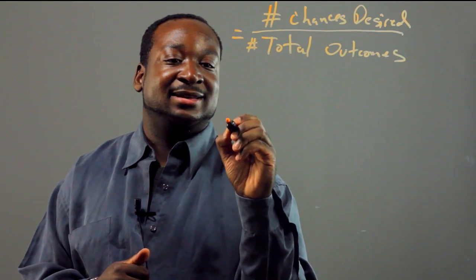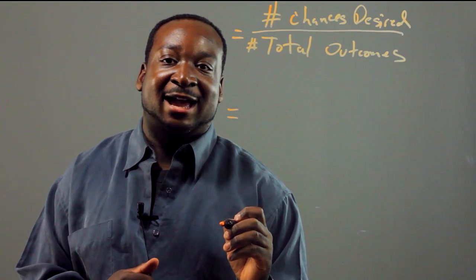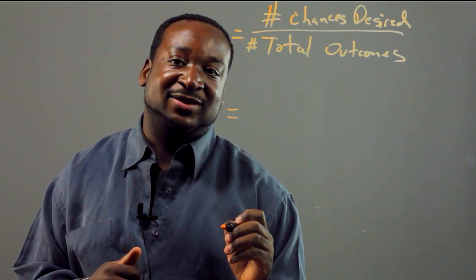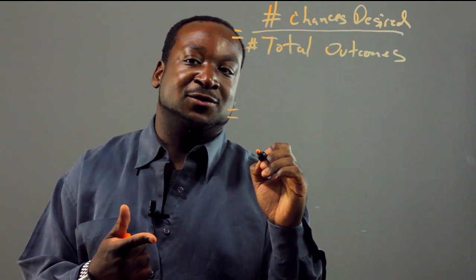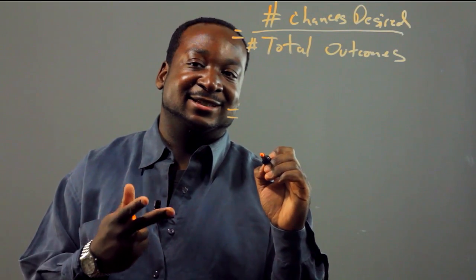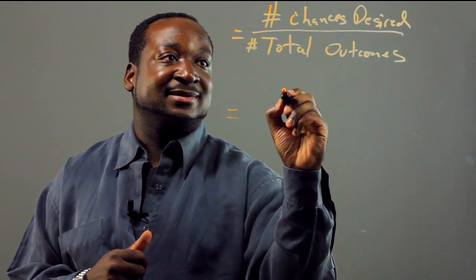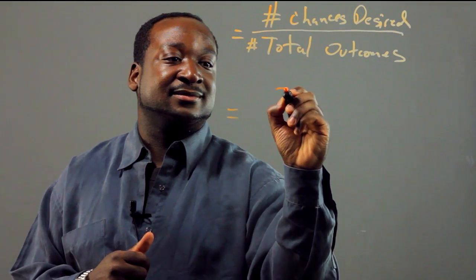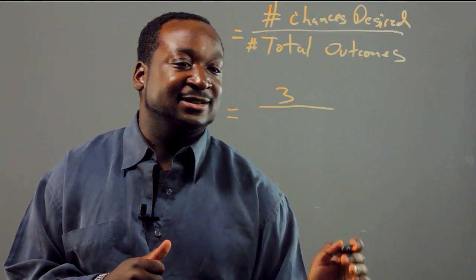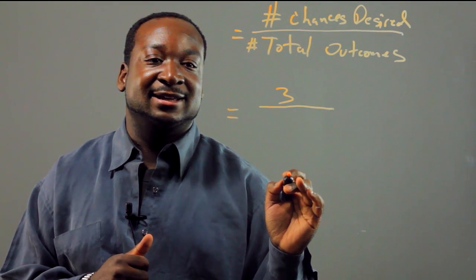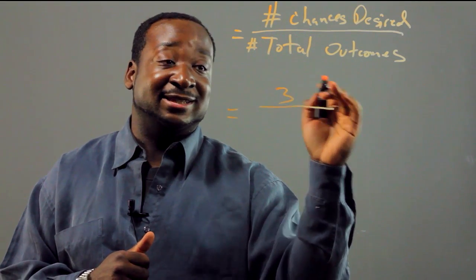Now, when rolling the dice, there are how many even numbers? We have two, four, and six. So that's three. Three is the number of outcomes that we desire.